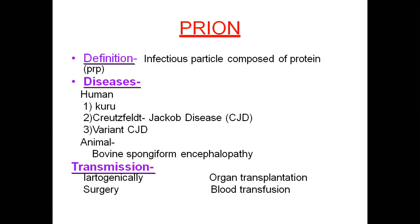In animals, bovine spongiform encephalopathy (BSE) is a zoonotic transmitted disorder caused by a specific type of protein secreted by animals, causing encephalopathy — inflammation conditions observed during prion-type infection.